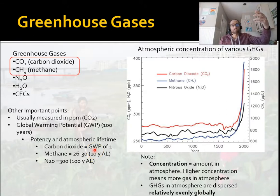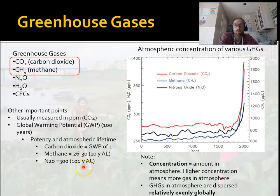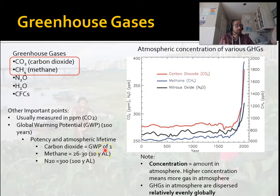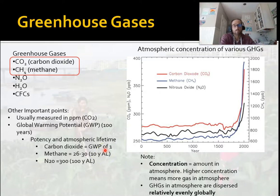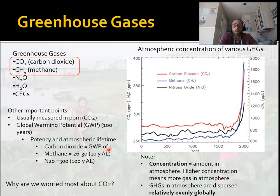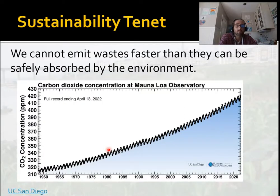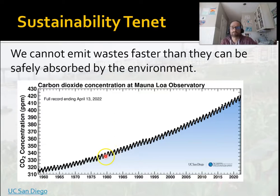So methane is much more potent than CO2 — about 30 times more so. One ton of methane will do about 30 times as much warming as one ton of CO2. So why are we most worried about CO2? I mean, if methane is so potent, why is CO2 the one you hear about most? I'll answer that in a minute. We've been measuring CO2 directly since 1958 — this is called the Keeling Curve. There's a machine at the top of a mountain in Hawaii that's been measuring it.